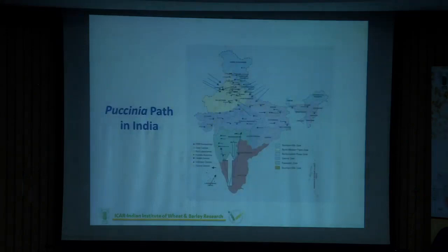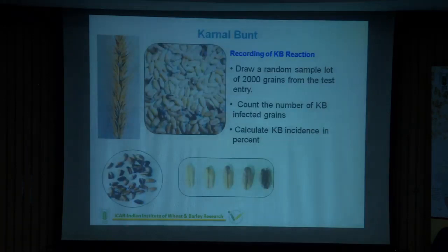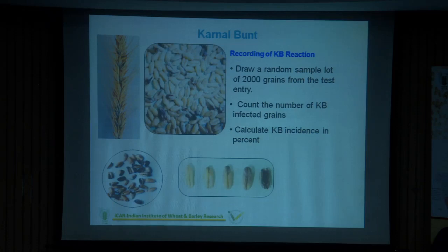Dr. S. Nagarajan, former director of IARI, was a pioneer pathologist who developed the Puccinia path — the pathway of how rust fungus moves from the hills in the south to the plains and infects the wheat crop during the season. Similarly, for yellow rust, it comes from the Himalayas and western disturbances from neighboring countries and can cause disease here. Karnal bunt is more important for export purposes — it was first reported in Karnal and our wheats don't meet international zero-tolerance standards for this disease, which hampers exports.